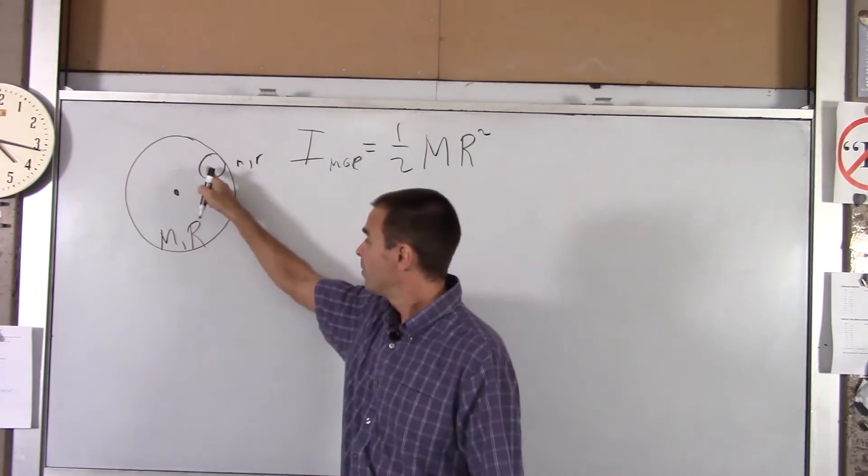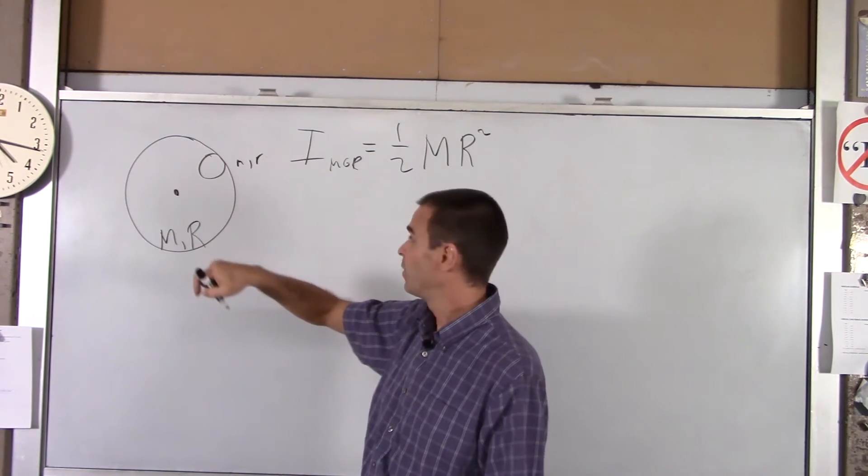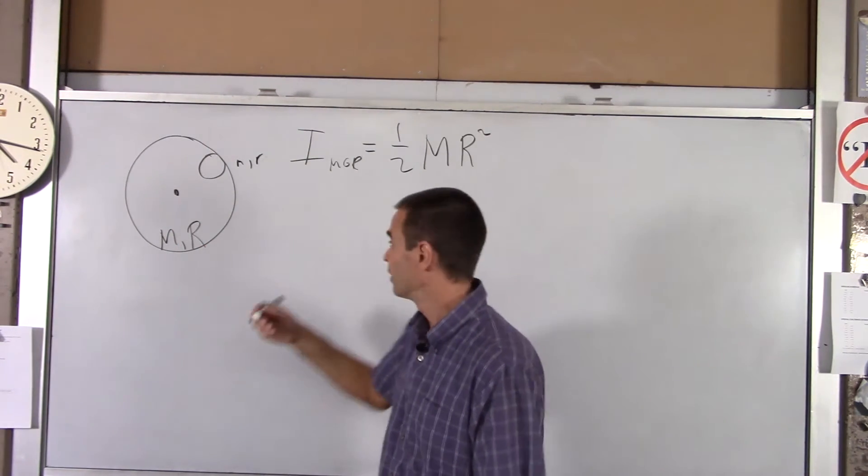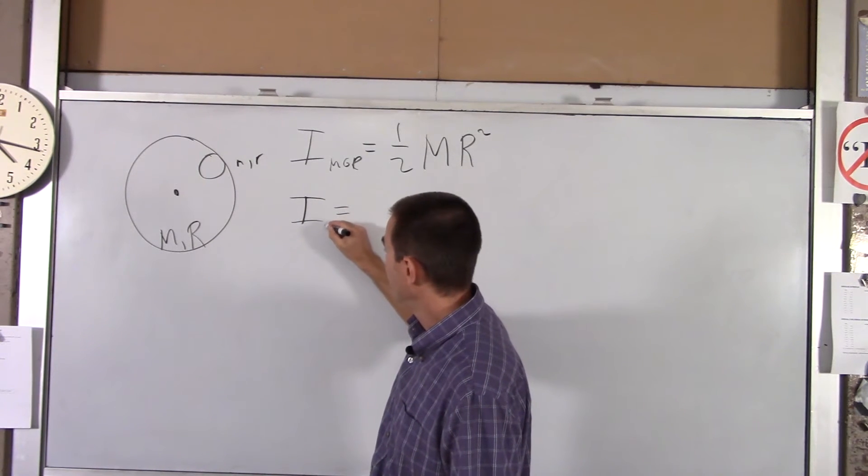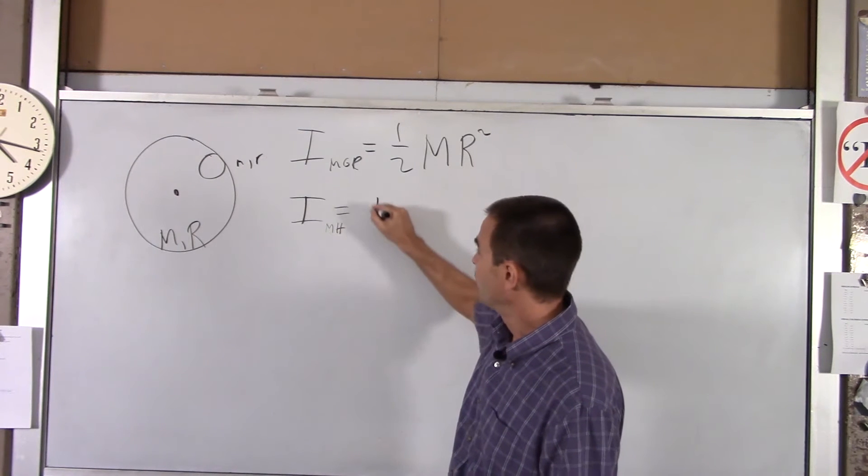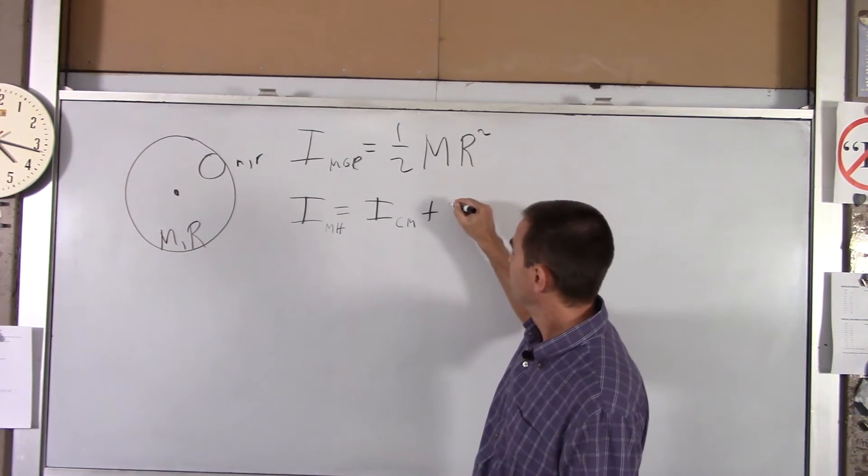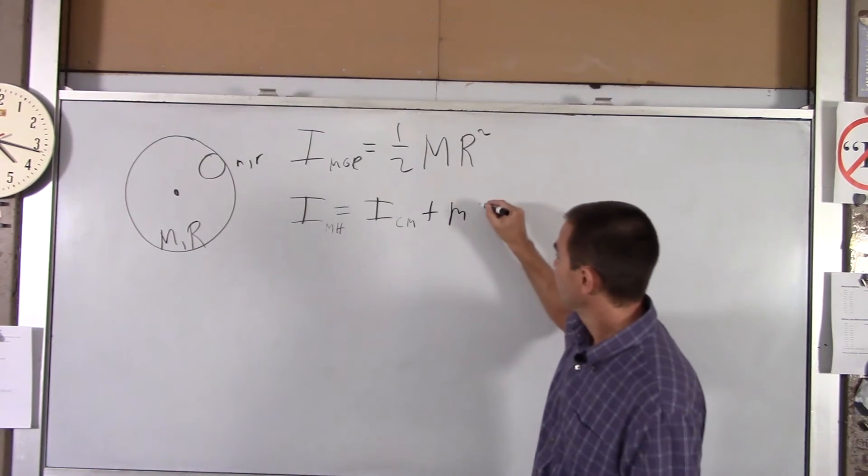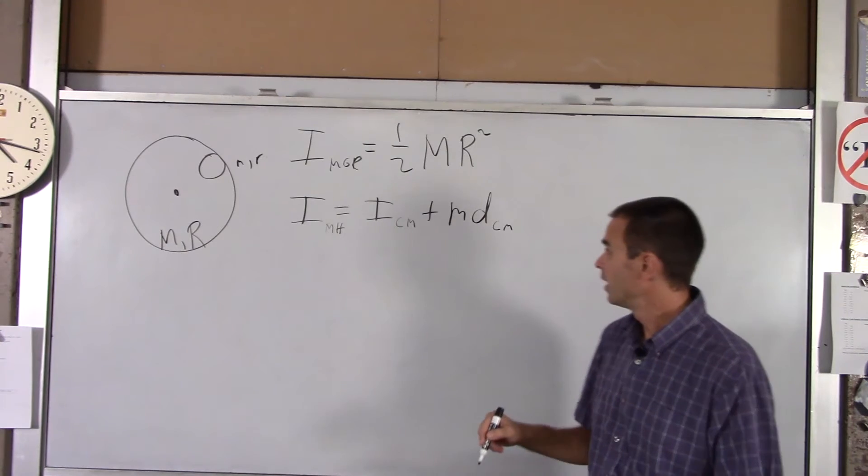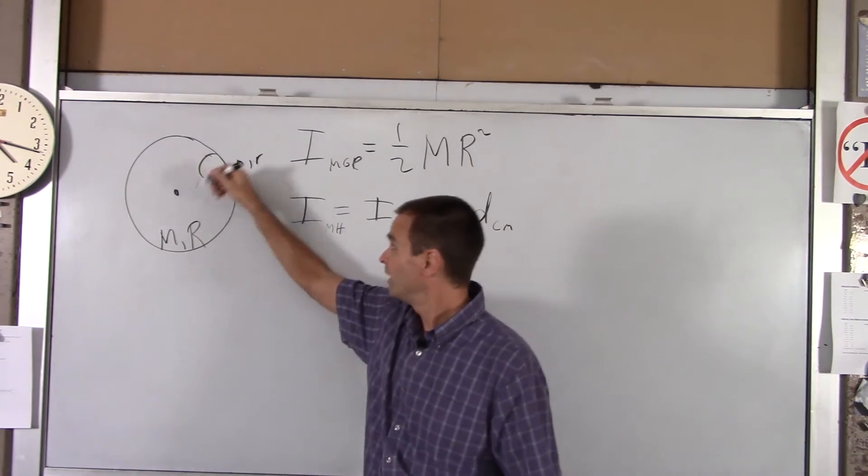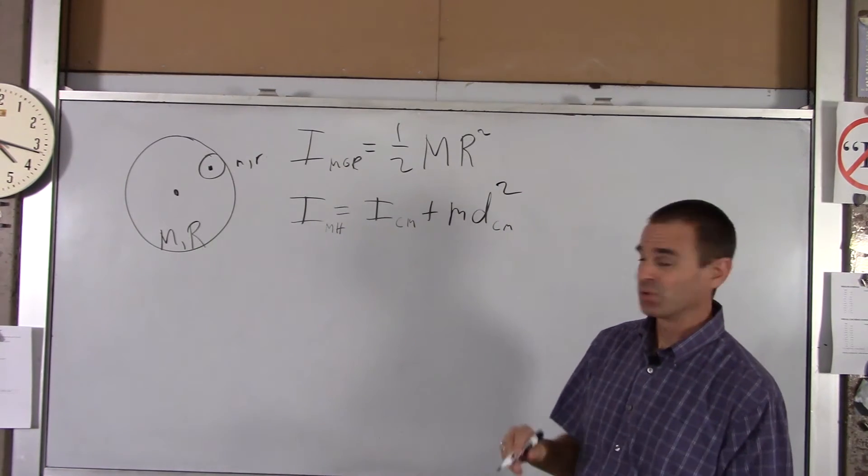For the manhole cover, we are not on its center. So we have to use the parallel axis theorem. So the moment of inertia for the manhole cover, I'll call that MH, is equal to the moment of inertia about its center of mass plus its mass times the distance from our pivot point to its center of mass squared.